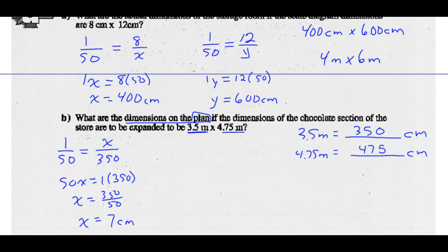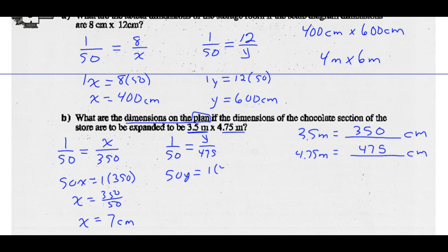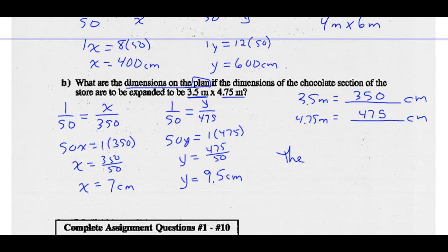All calculations were in centimeters. The plan dimensions for the chocolate section are 7 centimeters by 9.5 centimeters.